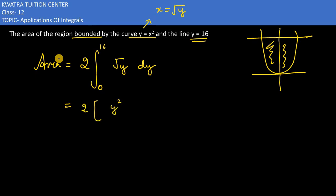So I would get half is there. I would add 1, so you would get 3 by 2. 2 will go and then I would be substituting the value here. 2 into 2 is 4. 4 by 3 is there, y to the power 3 by 2 is there, 16 is there, 0 is there.